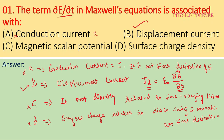So ∂E/∂t represents only the displacement current. For a conduction current it is not the time derivative of E. We have to consider these four options carefully and choose the correct one.